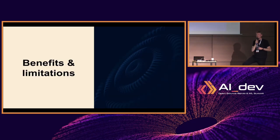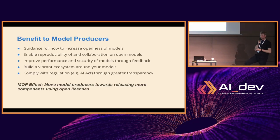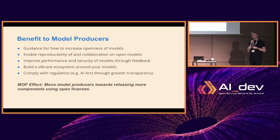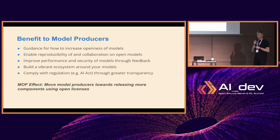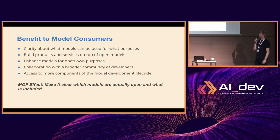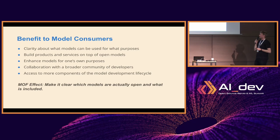There are major benefits for model producers: it provides a systematic methodology and guidance for developers on how to increase openness and which components to share to reach a certain tier. It enables reproducibility and collaboration on models, which can improve performance and security through community feedback. You can build a vibrant ecosystem around your models and also comply with regulations like the AI Act by increasing transparency. For consumers — particularly enterprises — it provides clarity about the extent to which a model is open and the licenses used, enabling them to build products and services and collaborate with broader communities.